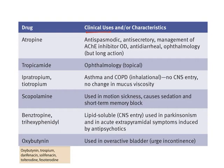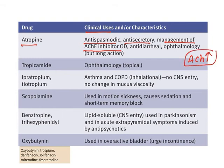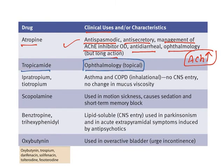Now let us understand the clinical uses of anticholinergic drugs. Atropine can be used as an anti-spasmodic, anti-secretory, and in management of acetylcholinesterase inhibitor overdose — since acetylcholinesterase inhibitors increase acetylcholine levels, atropine controls this. It is also used as an antidote and in ophthalmology, where it has long duration of action. Tropicamide is used in ophthalmology to cause mydriasis for eye examination. Ipratropium and tiotropium are used to treat asthma and COPD; they are given as inhalational drugs, do not cross the blood-brain barrier, so there is no CNS entry, and they cause bronchodilation without changing mucus viscosity.